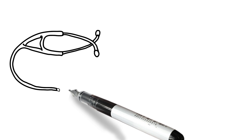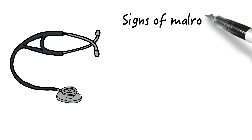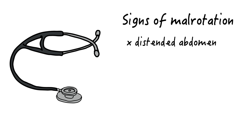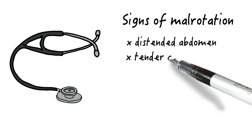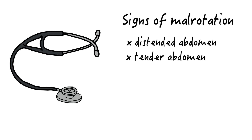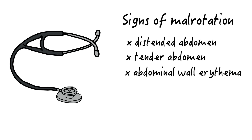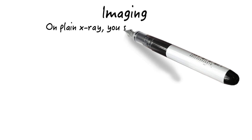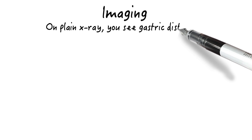You proceed with your physical exam, which is unremarkable other than a mildly distended upper abdomen. This reassures you, as the abdomen can become more distended and tender as vascular compromise to the completely obstructed bowel develops. Later, you would also be able to observe abdominal wall erythema and shock. Sunny has already had some imaging done, and her plain anterior-posterior abdominal film combined with the lateral decubitus shows gastric distension.